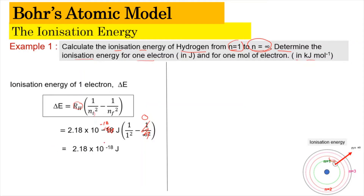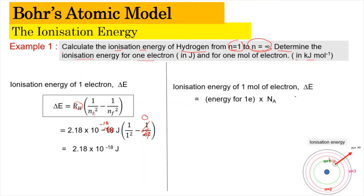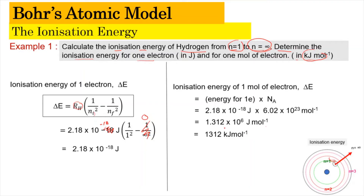For one mole of electrons, you multiply the energy by Avogadro's number, which is 6.02 times 10 to the power of 23 per mole. This gives 1.312 times 10 to the power of 6 joules per mole. Converting to kilojoules per mole, that becomes 1.312 times 10 to the power of 3 joules per mole, which equals 1312 kilojoules per mole. This is how you find the ionization energy for the hydrogen atom in the Lyman series, since it refers to n equal to 1.